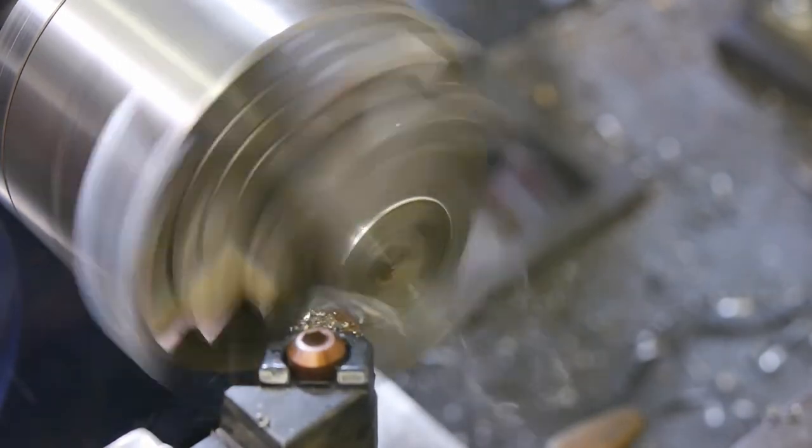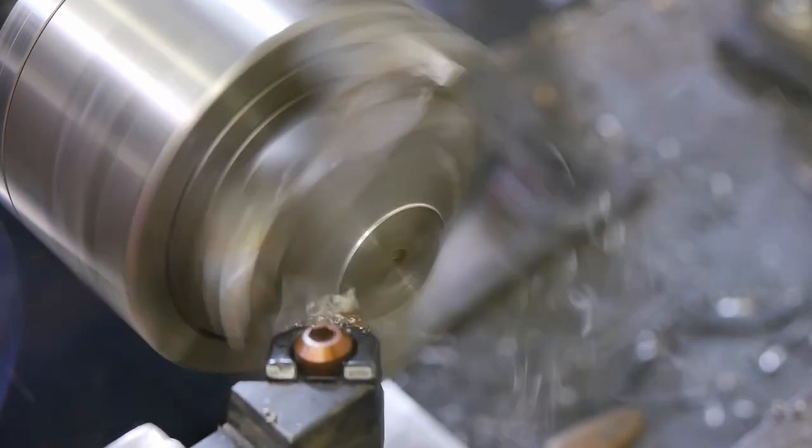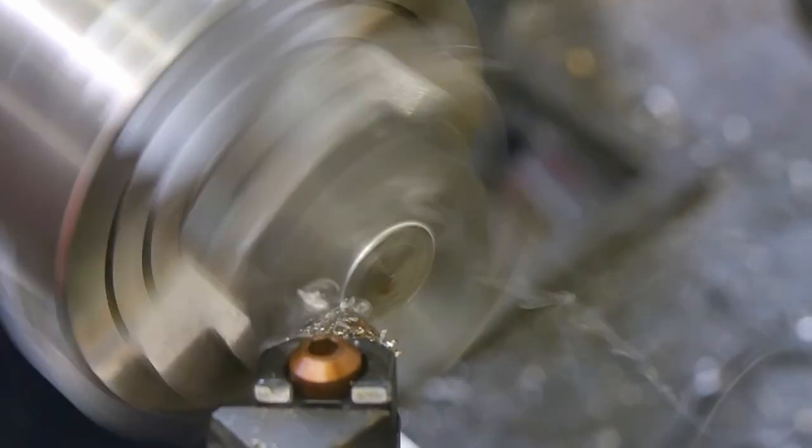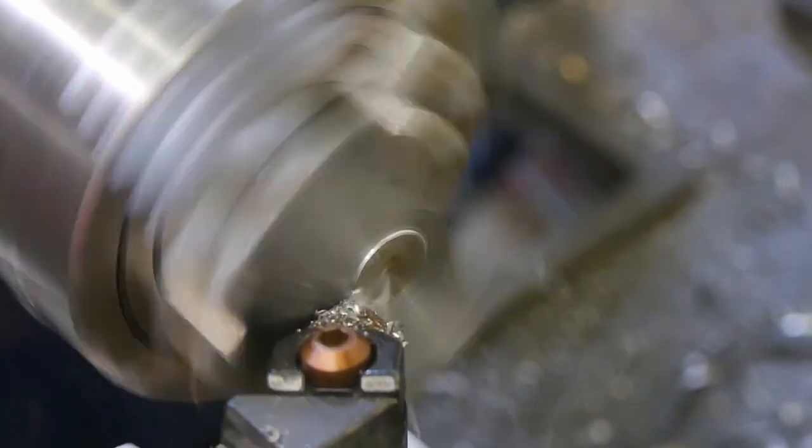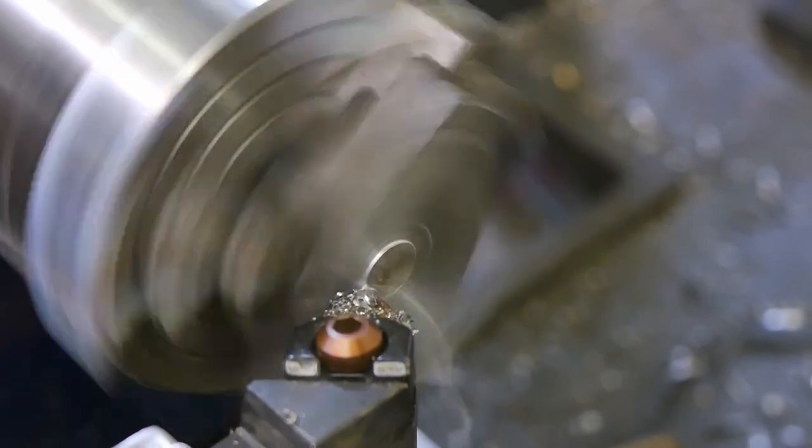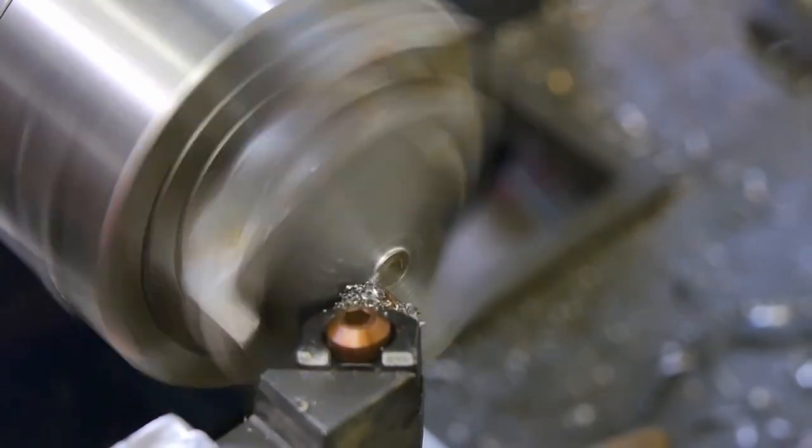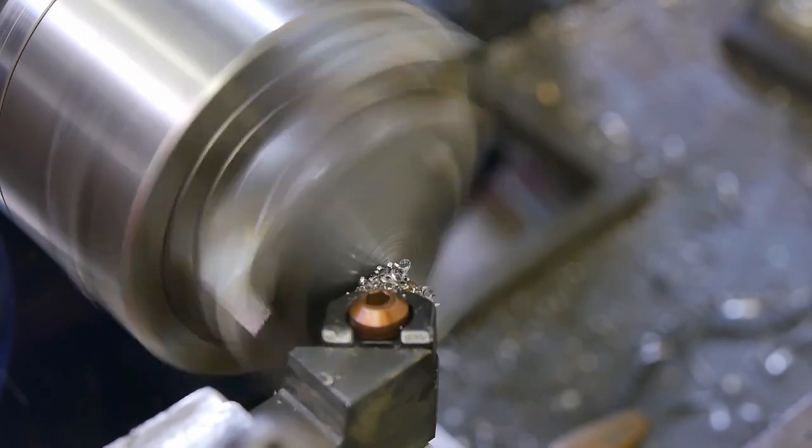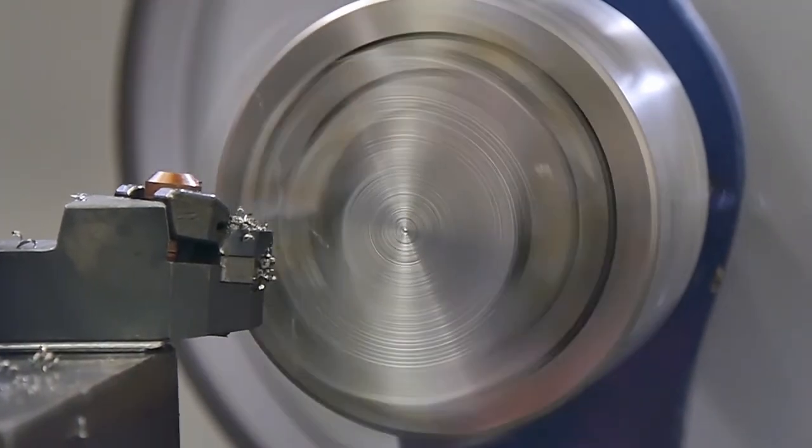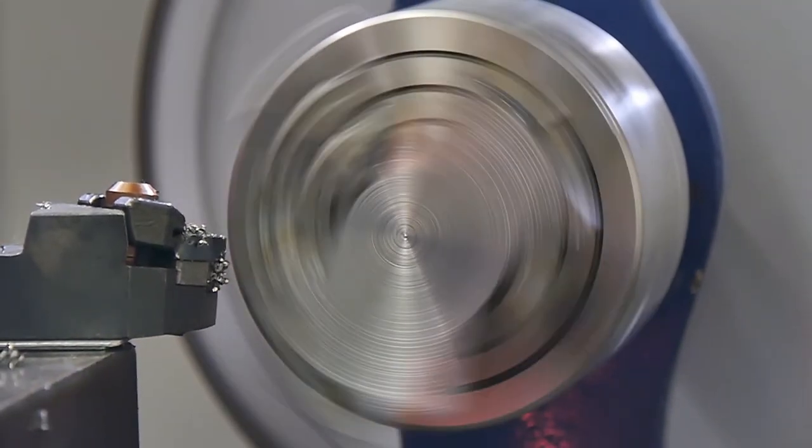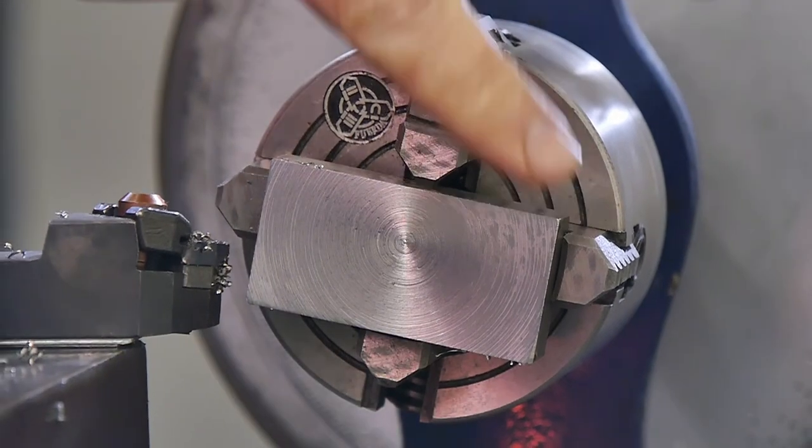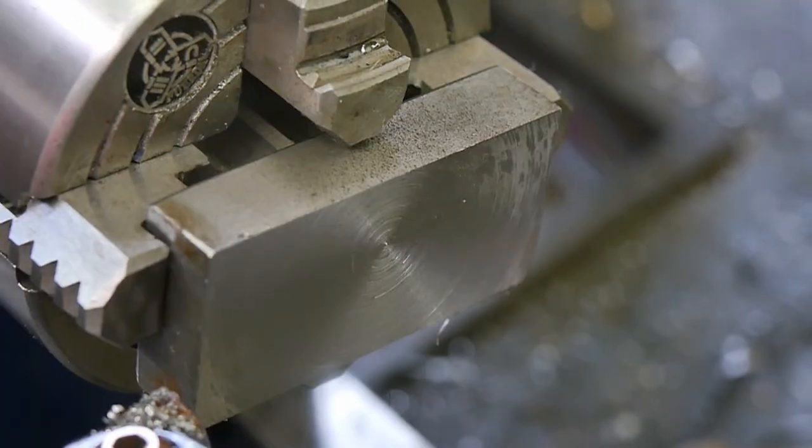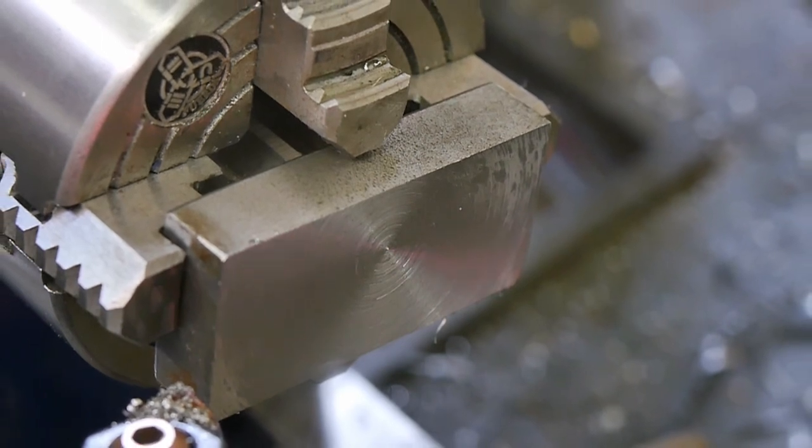I think I might be taking off a bit too much because the cross slide is hard to turn. Maybe the pointy bit is messed up. Let's see how that looks. Feels like a little high spot in the middle there. Let's do another finishing pass, a very light one.